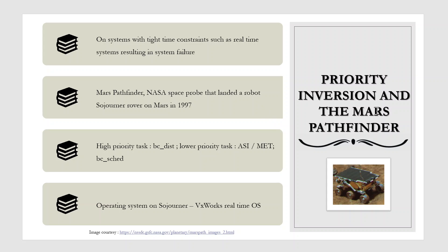Now let's see priority inversion and the Mars Pathfinder. Priority inversion can be more than a scheduling inconvenience. On systems with tight time constraints, such as real-time systems, priority inversion can cause a process to take longer than it should to accomplish a task. When that happens, other failures can cascade, resulting in system failure. Consider the Mars Pathfinder, a NASA space probe that landed a robot — the Sojourner rover — on Mars in 1997 to conduct experiments. Shortly after the Sojourner began operating, it started to experience frequent computer resets.